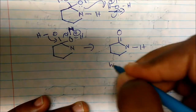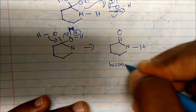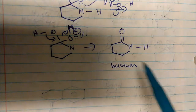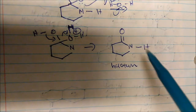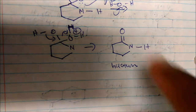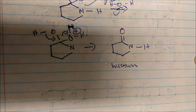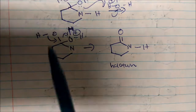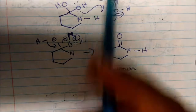This cyclic product is called a lactam. The difference between lactone and lactam: in a lactone we have oxygen in the ring; in a lactam we have nitrogen. The chemistries are very similar and we can predict both from the same mechanistic principles.